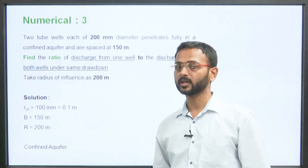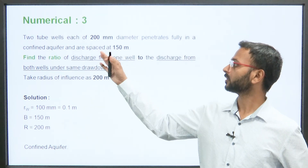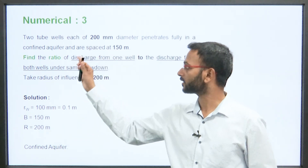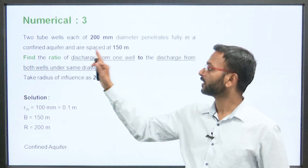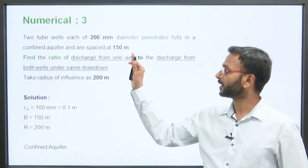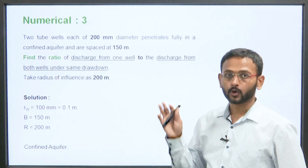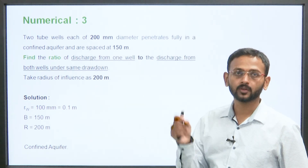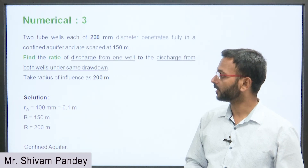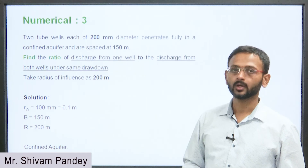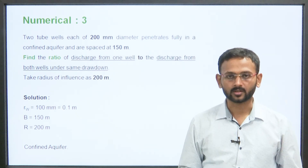This is one numerical problem which you can try at home and we will be discussing it in the next class. The problem: 2 tube wells, each of 200 mm diameter, penetrate fully into a confined aquifer and are spaced 150 m apart. Find the ratio of the discharge from one well to the discharge from both the wells under the same drawdown. The radius of influence is 200 meters. Try this at home and we will discuss it in the next class. Thank you for today.